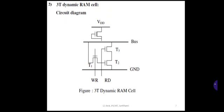The first one is the 3T dynamic RAM cell. The figure shows the circuit diagram of the 3T dynamic random access memory cell. As you can see, there are three transistors: T1, T2, and T3. That is why the name is 3T — three transistor dynamic RAM cell. There is one more transistor, which is a pull-up transistor made up of a depletion mode transistor.